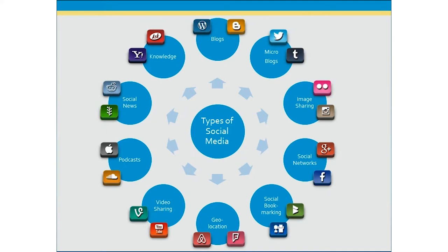Social bookmarking sites allow users to create, annotate, edit, and share actual URL bookmarks to other content on the internet — could be interesting news articles, any links that someone finds interesting. Once these links are shared with the community, they're tagged and organized and sometimes voted on. Some examples would be Digg, Delicious, or StumbleUpon.